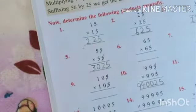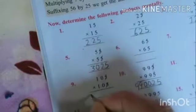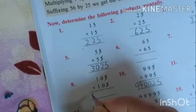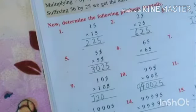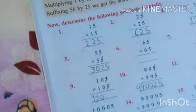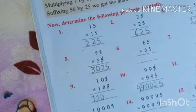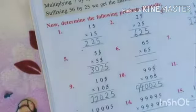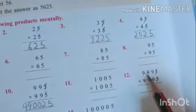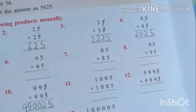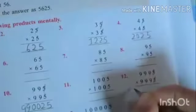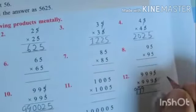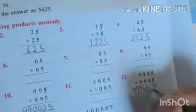Same, ye bhi aapko main karke dikha deti hu. 10 multiplied by, what we have to do? Hume product nikalna hai iska aur iski after number se. It means I am showing you 999 multiplied by 1000. Pehle me suffix in 25 karna hai. When you will multiply this number you will get 999,000. Suffix in kya 25 ko.